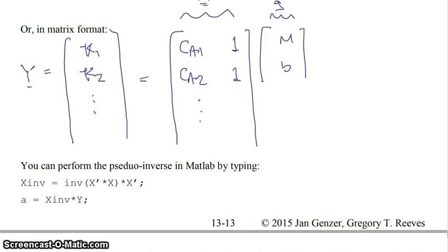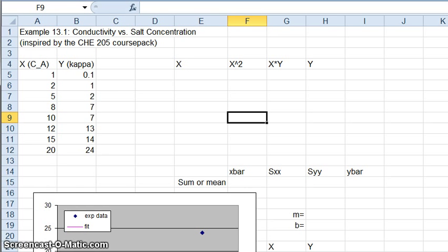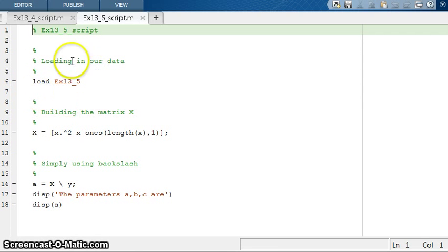And so we can perform this pseudo-inverse in MATLAB by typing these following commands. However, in MATLAB, MATLAB just knows what to do. And so you don't actually have to do all this rigmarole to get this thing called this pseudo-inverse of X. What you can do is if you just use the backslash operator, MATLAB just already knows what to do. And even if it's an over-determined system, it knows exactly how to handle that. So if you remember from class, our data in Excel looked like this. So this is our concentration of A. This is our values of kappa that were measured. And what we did in class is we filled this whole thing out and figured out what m and b were.